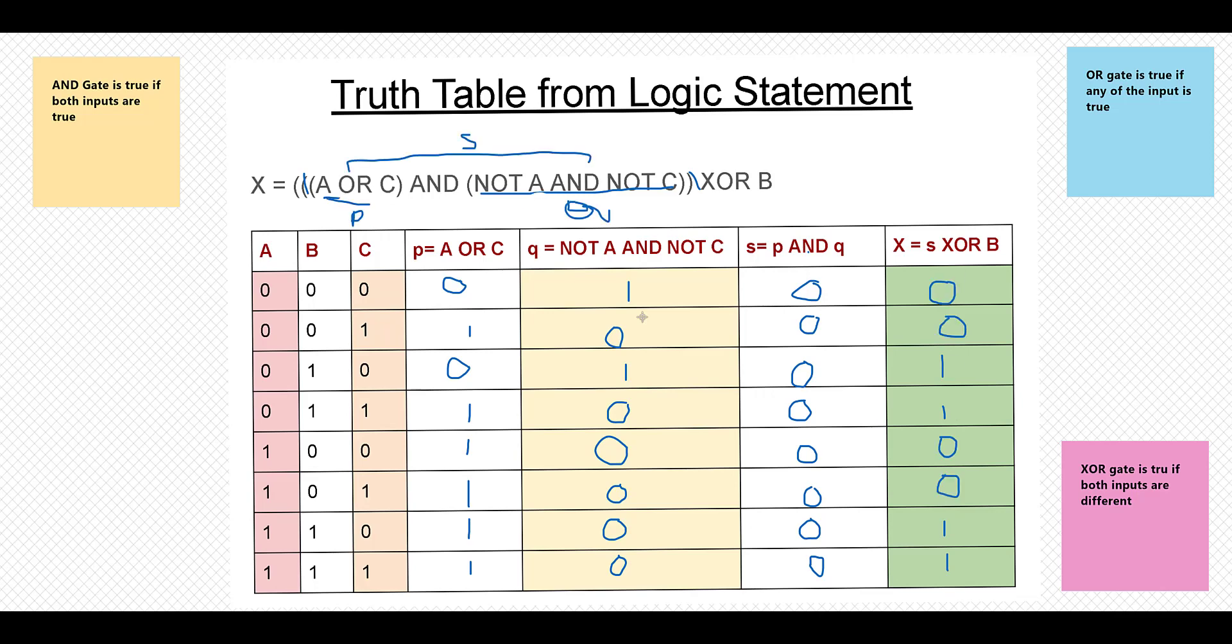This is how you can calculate truth table from a logic statement without drawing all the gates and the diagram. Try this approach on different logic statements and comment below if you have any questions.